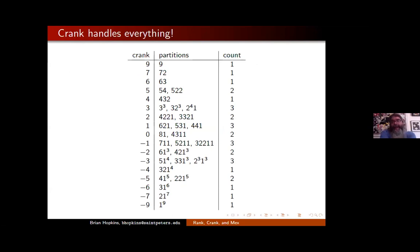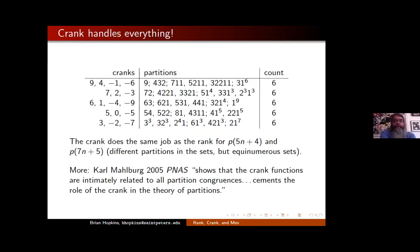Even better, the crank doesn't handle just the mod 11 case standalone — it deals with all three of Ramanujan's congruences. For the 30 partitions of 9, grouping by crank mod 5 gives a different breakdown into five groups of six. So you don't need the rank anymore; the crank takes care of all three congruences. Karl Mahlburg wrote a nice paper in the Proceedings of the National Academy of Sciences, and Andrews and Ono wrote that this work shows crank functions are intimately related to all partition congruences. This cements the role of the crank in the theory of partitions, and that's what motivated our work.